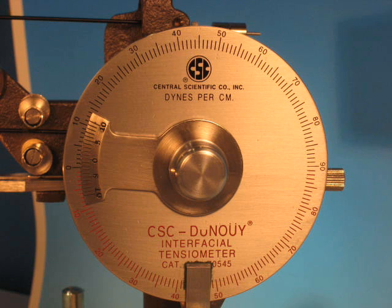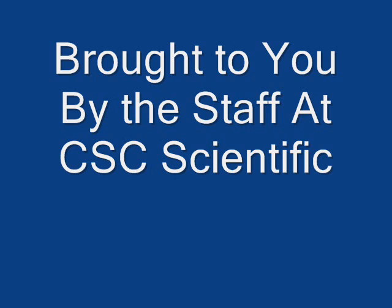At this point, the position of the dial indicator is the surface tension in dynes per centimeter. These are the steps to do a surface tension measurement using a CSC scientific tensiometer.